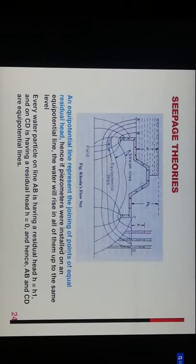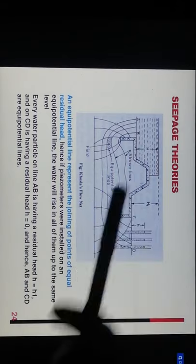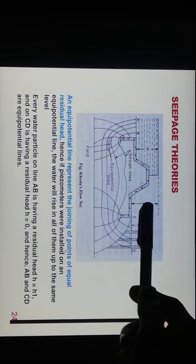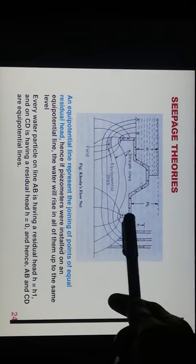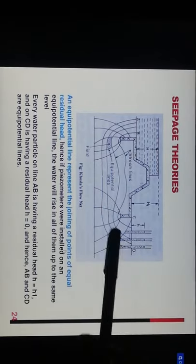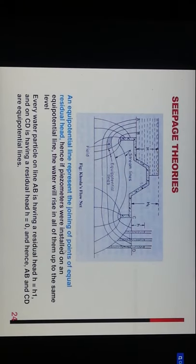An equipotential line represents a joining of points of equal residual head. If piezometers were installed on equipotential lines, the water would rise in all of them up to the same level. For example, points on line AB have residual head h equal to h1, and points on CD have h equal to zero. Hence AB and CD are equipotential lines.